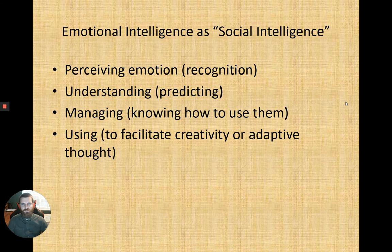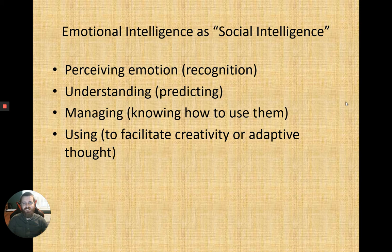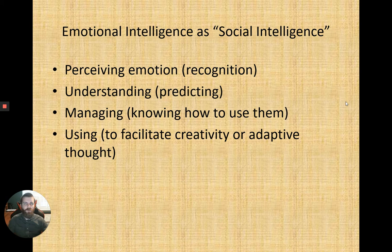Emotional intelligence is classified as a social intelligence. People with advanced emotional intelligence recognize they may be better at perceiving emotions, understanding emotional behaviors, and predicting how someone might react in a given scenario. They're better at managing emotions, knowing appropriate emotions to use, and using emotions to bring out creativity or work through problems.